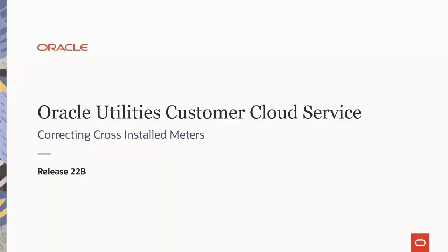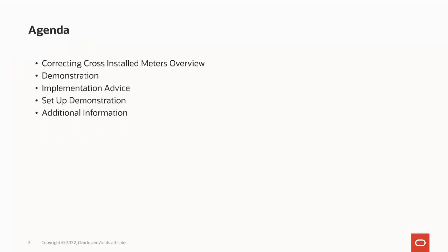Hello, my name is Jayesh. Welcome to the session that discusses the correcting cross-installed meters capability, which is available in the 22B release for Oracle Utilities Customer Cloud Service. In this session, we will talk about this new feature and how it can impact your business. We will give you an overview of the new capability, followed by more detail to explain how you would use it and the benefits to your business. Then we will walk you through a demonstration.